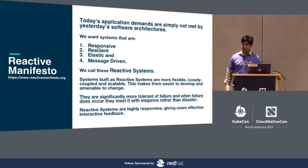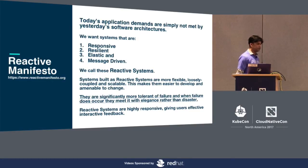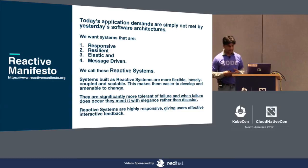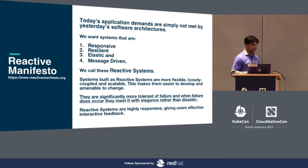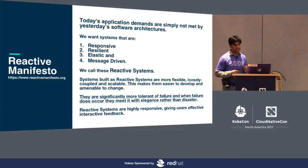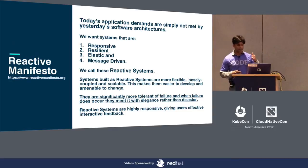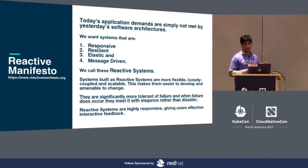Essentially in 2014 there was a Reactive Manifesto which came out. More than 30,000 people have signed it. If you haven't read it I would highly encourage you to go and read it — very nice read. The key theme there was that today's application demands can simply not be met by yesterday's application architectures. What we want are systems which are responsive, resilient, elastic, and message driven.